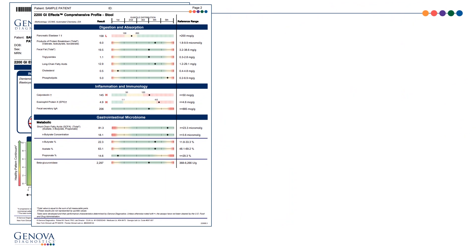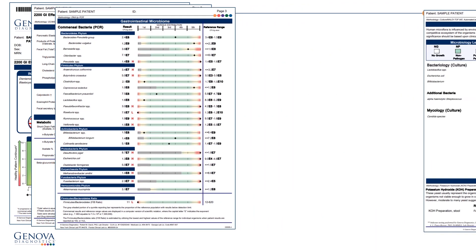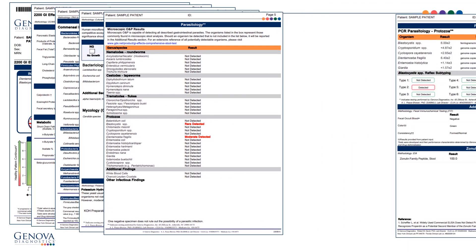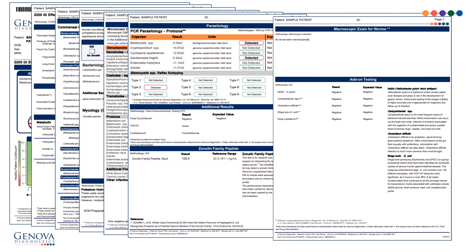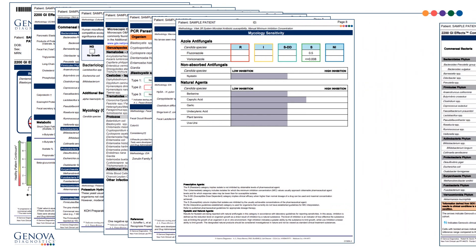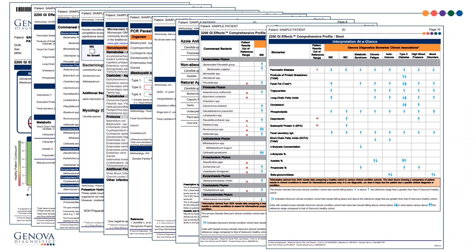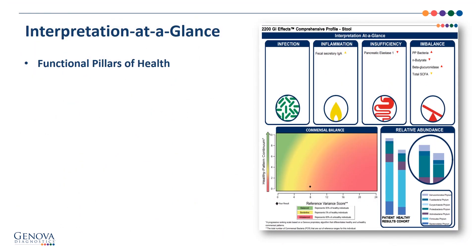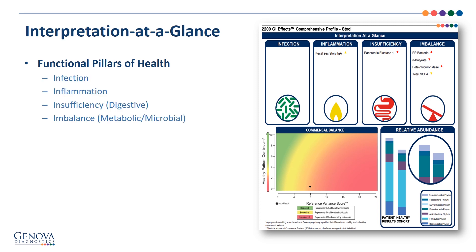The GIFX Comprehensive Test is made up of several pages of biomarkers, providing information about the patient's overall gastrointestinal health. The first page is the interpretation at a glance, and at the top we see the four functional pillars of health. The pertinent abnormal results are populated into the boxes of infection, inflammation, digestive insufficiency, and metabolic or microbial imbalance.